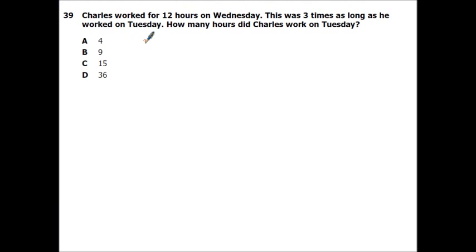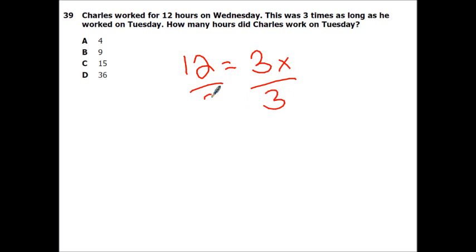Charles worked 12 hours on Wednesday. This was 3 times as long as he worked on Tuesday. How many hours did Charles work on Tuesday? It's just 12 equals 3 times whatever he worked, so divide by 3 — that's 4. He worked more hours on Wednesday than Tuesday, so you know right away the larger answers are gone. Just divide by 3.